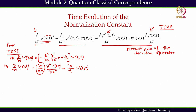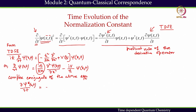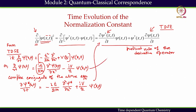This is one part of the TDSE. We then take the complex conjugate of the above equation. The complex conjugate of ψ(x,t) gives ψ*(x,t), and taking the complex conjugate of the entire expression gives: ∂ψ*/∂t = −(iħ/2m)(∂²ψ*/∂x²) + (i/ħ)V·ψ*(x,t). We now insert these expressions into the product rule expansion.